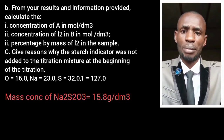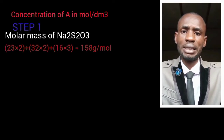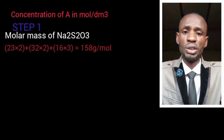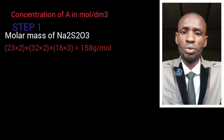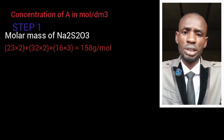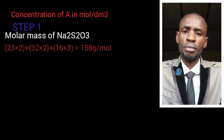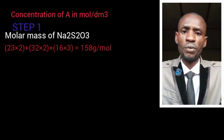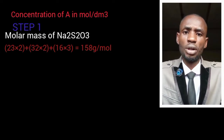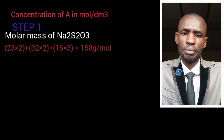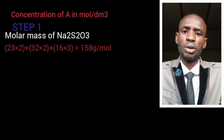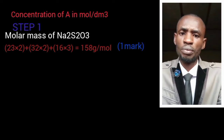We can determine the molar mass of sodium thiosulfate by adding the atomic masses of the formula together according to how the formula is written. We have two atoms of sodium, two atoms of sulfur, and three atoms of oxygen. Two atoms of sodium multiplied by the atomic mass; sulfur multiplied by two gives 32 × 2; and oxygen is 16 × 3. When we add everything together, the molar mass of sodium thiosulfate is equal to 158 grams per mole.